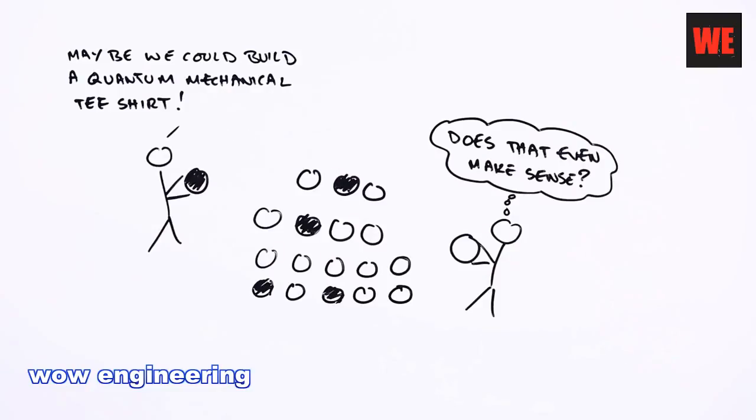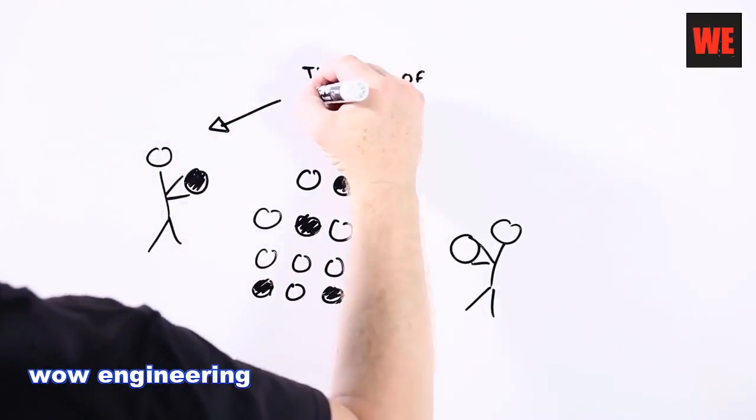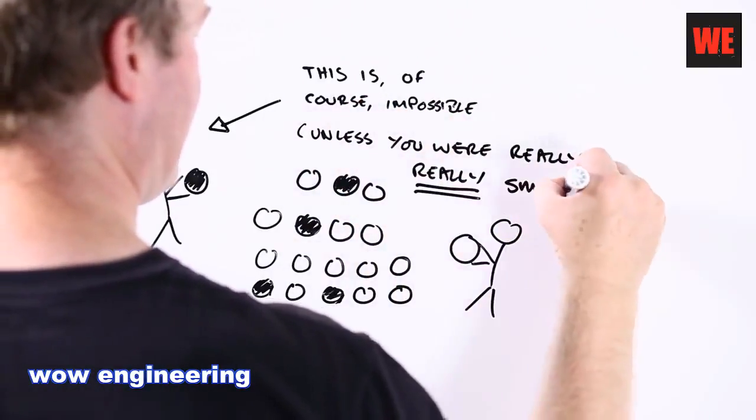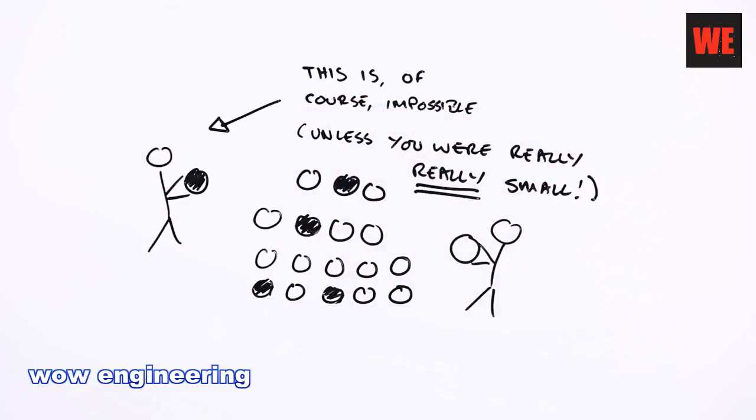The trouble is, atoms are really small. More than a million times smaller than the tip of your pinky finger. And that means they're not that easy to work with.